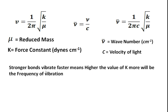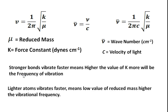From this formula we can see that stronger bonds vibrate faster. Strong bonds have a higher force constant k, and since wavenumber is directly proportional to k, the vibration frequency or wavenumber will be high. Second, if the atoms are lighter — meaning a low value of reduced mass — they will vibrate faster, because reduced mass is inversely proportional to the vibration frequency or wavenumber.